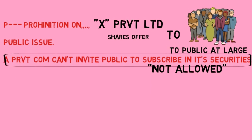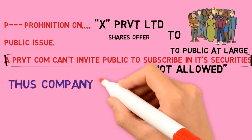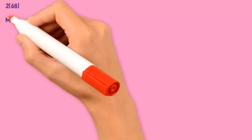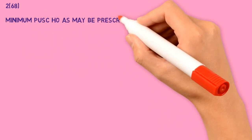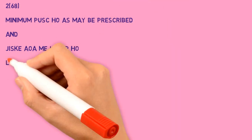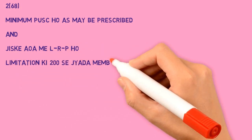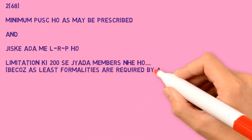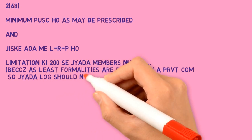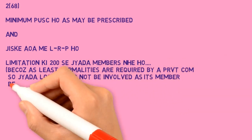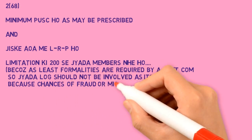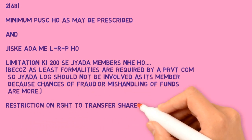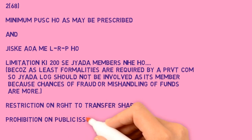Thus, a private company as defined under Section 2(68) must have minimum paid-up share capital as may be prescribed, and its Article of Association must contain LRP: L for Limitation — not more than 200 members; R for Restriction on the right to transfer shares; and P for Prohibition on public issue. Because fewer formalities are required by a private company, not many people should be involved as members, as chances of fraud and mishandling of funds are present.